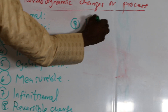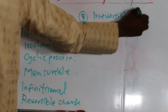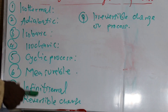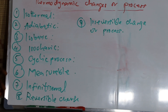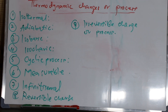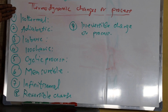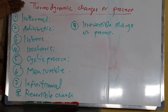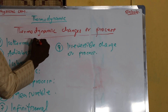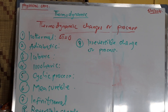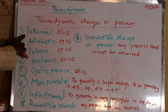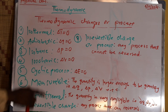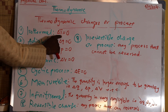We also have irreversible change or process. Let's discuss these nine categories of thermodynamic changes or processes. Number one is isothermal: this simply refers to any changes or process at constant temperature, that is, change in temperature ΔT is equal to zero.